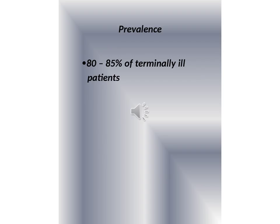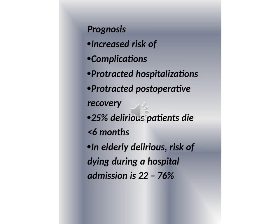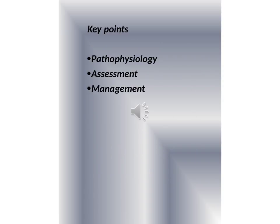Prevalence: 80 to 85% of terminally ill patients develop delirium. Regarding prognosis, delirium increases the risk of complications, protracted hospitalizations, and protracted postoperative recovery. 25% of delirious patients die within less than 6 months. In elderly delirious patients, the risk of dying during a hospital admission is 20 to 76%.